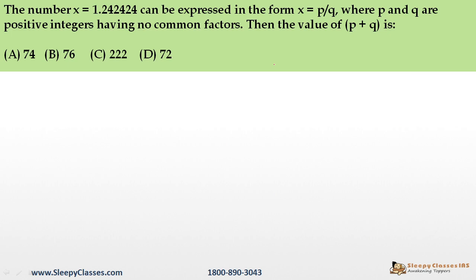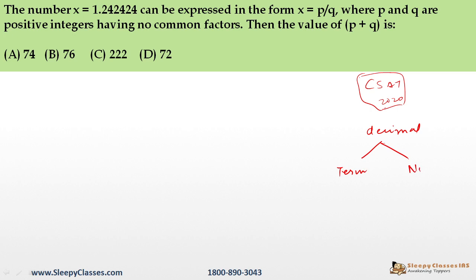This is a very good question, similar to ones asked in CSAT 2019 or 2020 — recurring non-terminating decimals. Let's do a quick review of decimals. There are two types: terminating decimals, which end at a finite decimal place (like 0.4, 0.5, 2.5), and non-terminating decimals. Terminating means the decimal expansion stops at a fixed number of places.